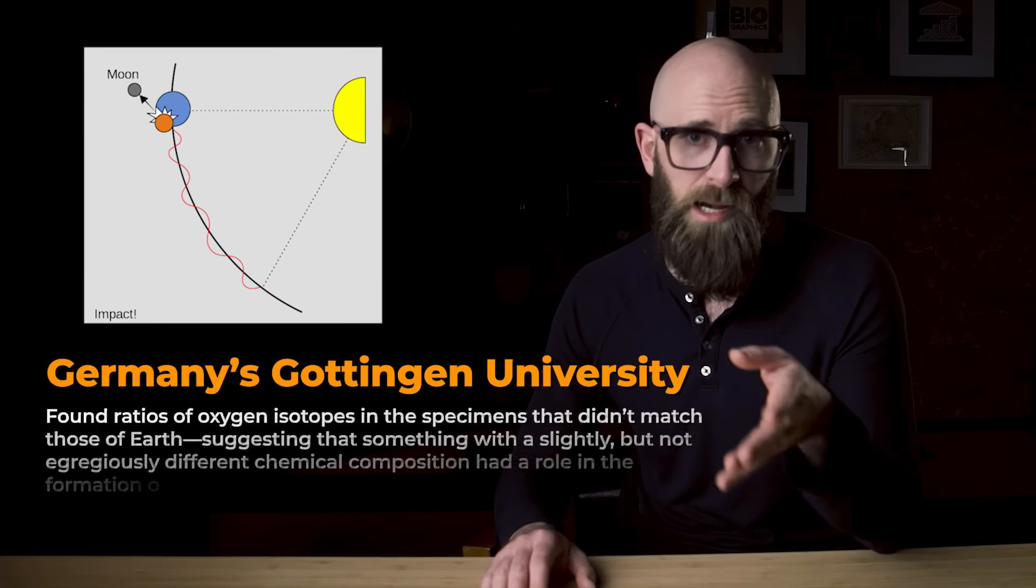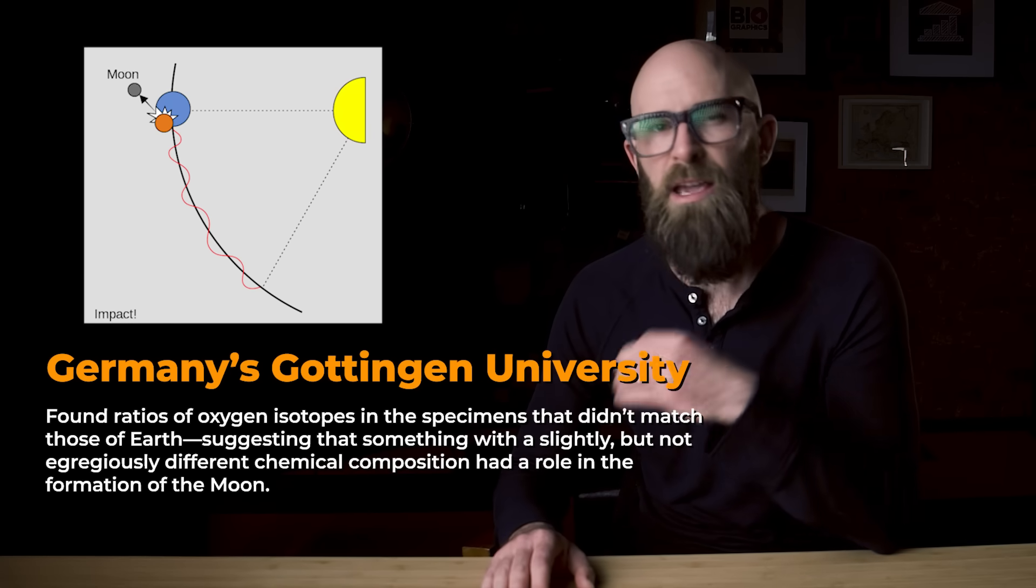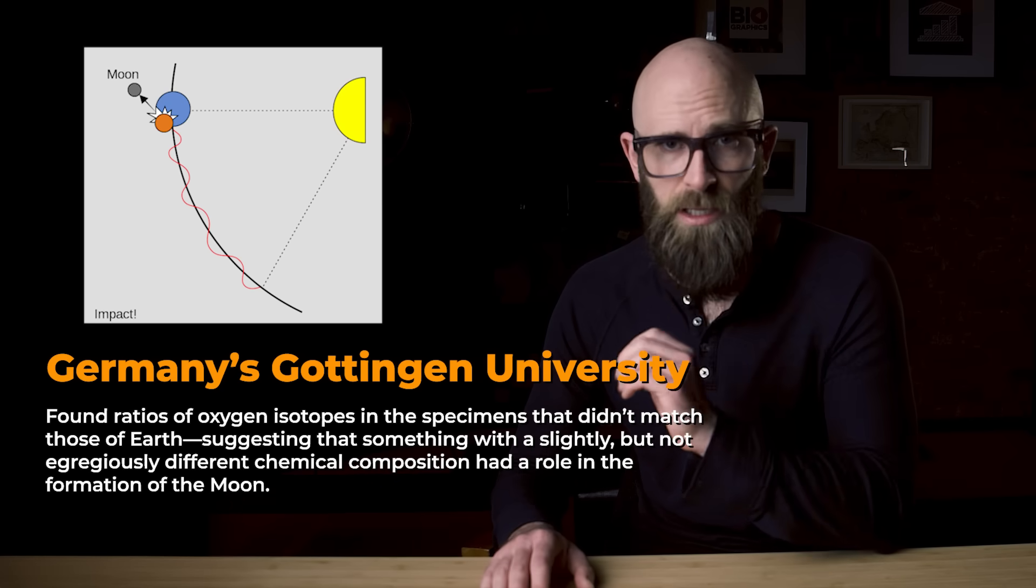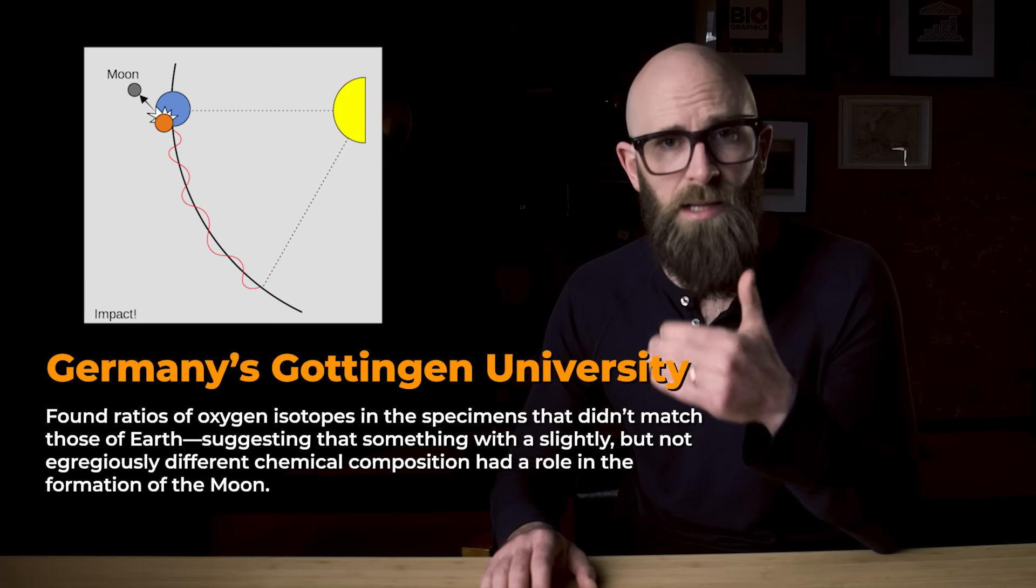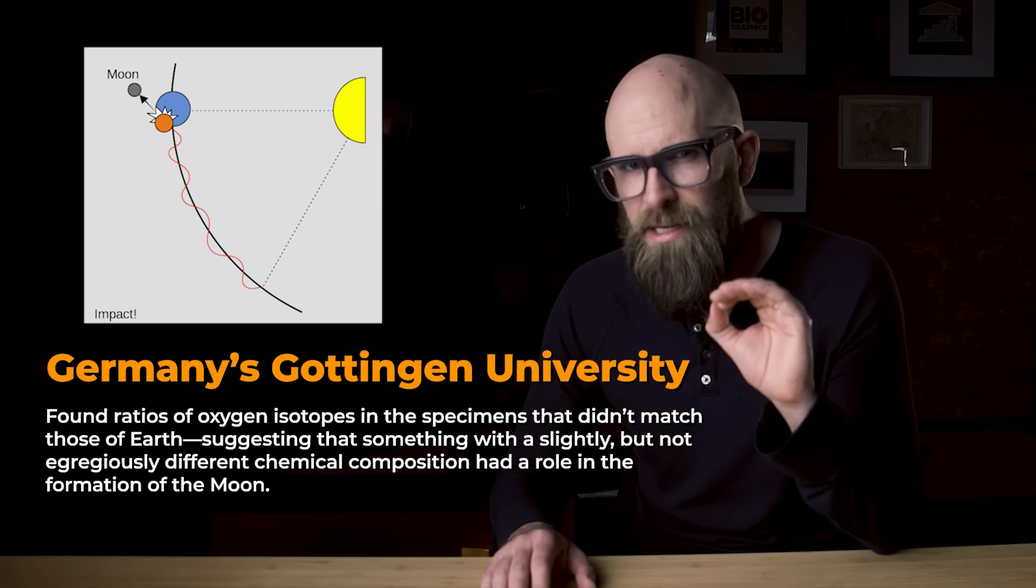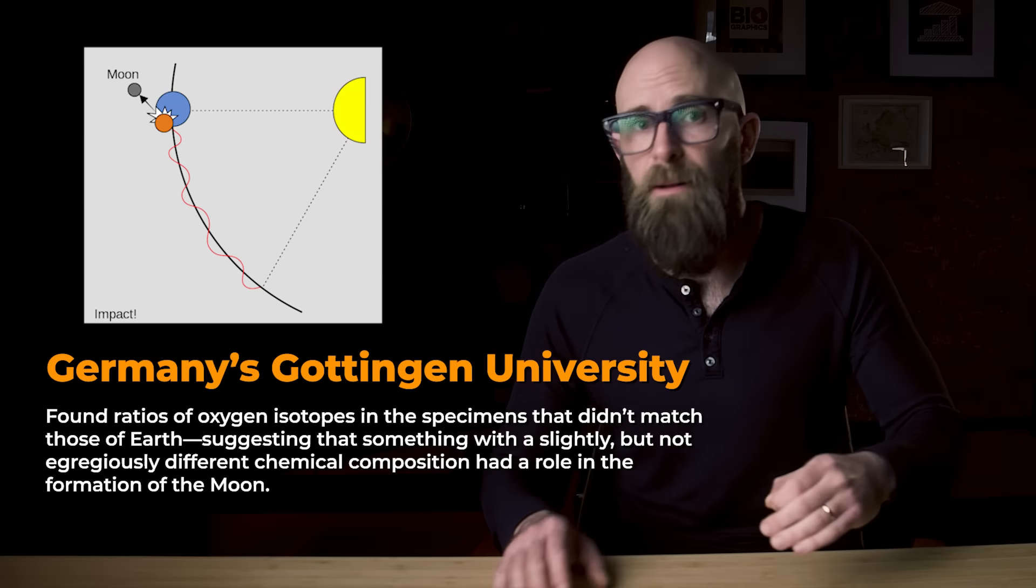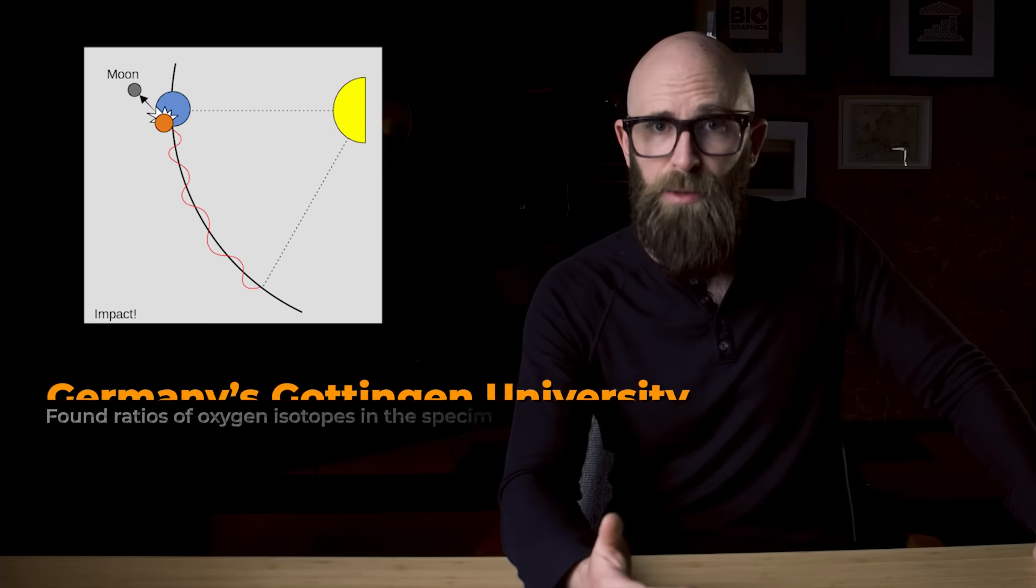But an exploration of moon rocks, carried out by scientists from Germany's Göttingen University, found ratios of oxygen isotopes in the specimens that didn't match those of Earth, suggesting that something with a slightly but not egregiously different chemical composition had a role in the formation of the moon. In fact, it was those early indicators of Earth-like chemical composition that first led researchers to believe that the planet Theia formed nearby to the Earth and used materials from the same accretion disk rather than further out in the solar system or someplace else entirely.